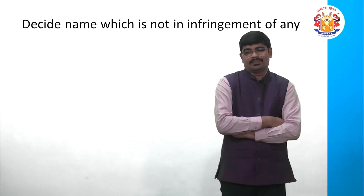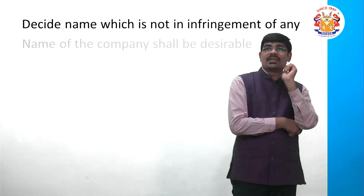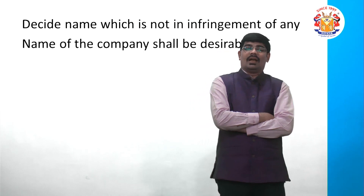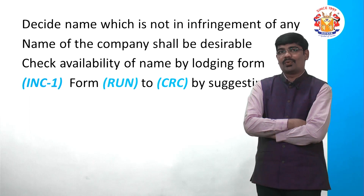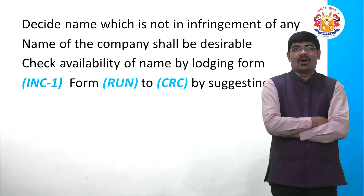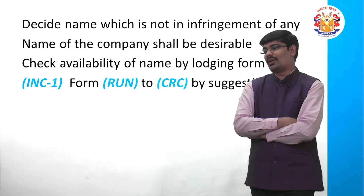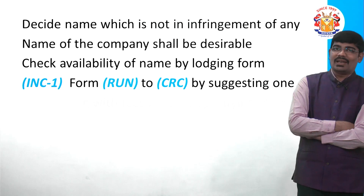Decide a name that does not match any existing company and does not infringe any registered trademark. The company name should be desirable — not confusing or conflicting. To check name availability, you file Form RUN (Reserve Unique Name) with CRC — Central Registration Centre. Previously Form INC 1 was used, but now Form RUN is used. You can suggest one name, pay fees of ₹1,000, specify the object, and attach supporting documents if any.